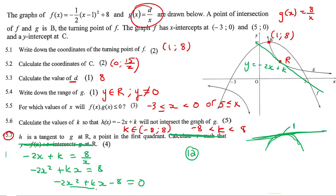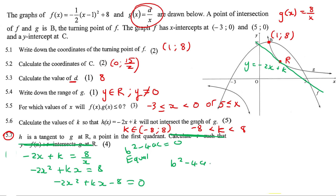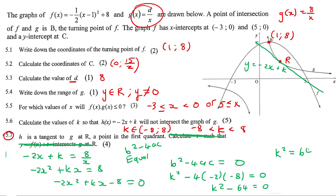We can't solve this because there's an x and a k, but using nature of roots: for a tangent the line touches the curve in exactly one place, meaning the quadratic has two equal roots. Equal roots occur when the discriminant equals zero. So b² − 4ac = 0, where b = k, a = −2, c = −8. This gives k² − 64 = 0, so k = ±8.